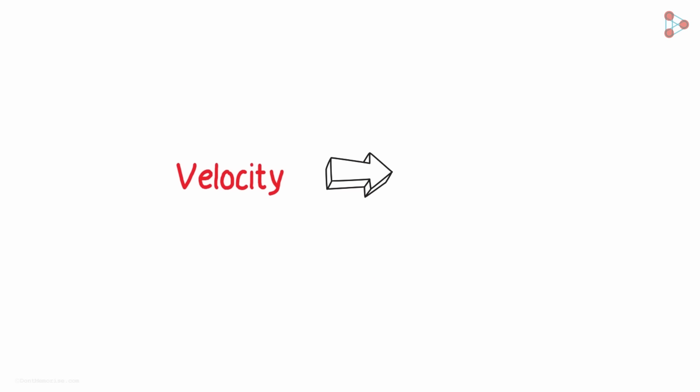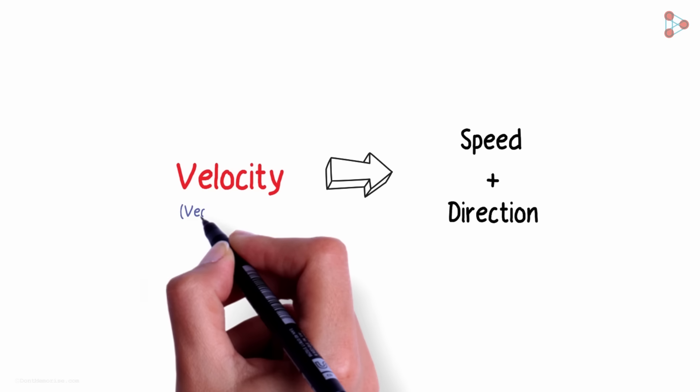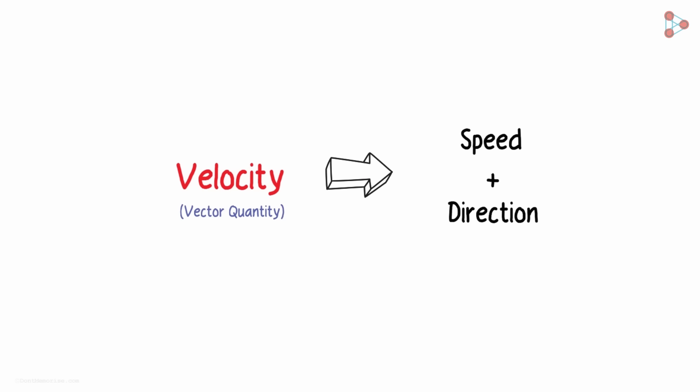Do you remember what velocity is? It's speed with direction and it's hence a vector quantity. Why is this important?